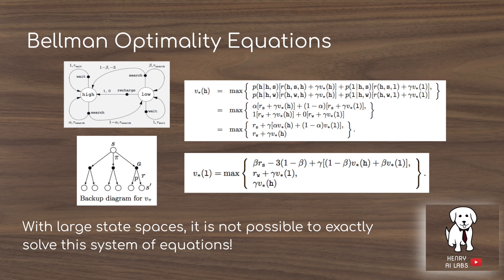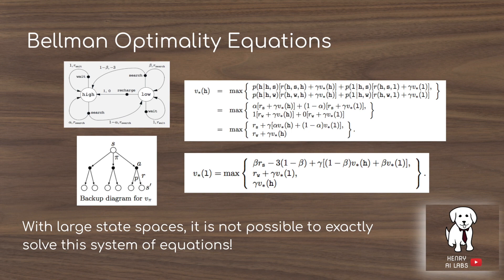Before we get into generalized policy iteration, let's quickly recap how we solve for optimal state values in Chapter 3. We used the Bellman optimality equations to look ahead to future states, use the reward achieved at the current state, and add it to the discount factor times the expectation of the next states. We're able to derive a system of equations, which we can solve relatively easily because we only have two states and a maximum of three actions. But with large state spaces — like the car rental problem, chess, or backgammon — it's really not possible to solve this system of equations explicitly.